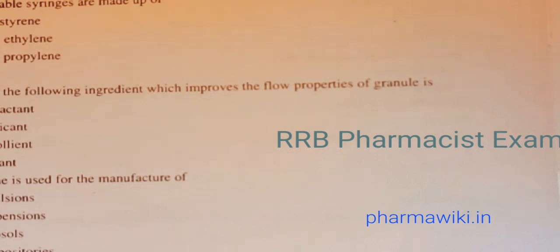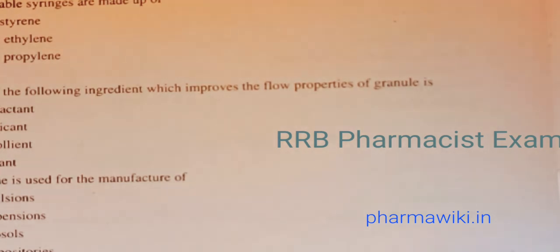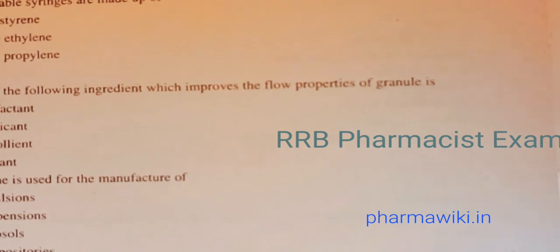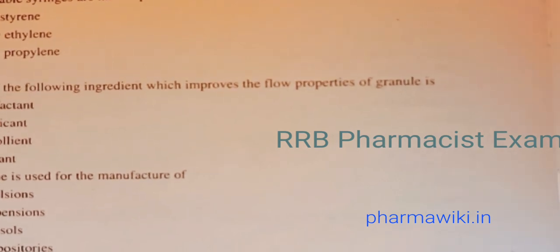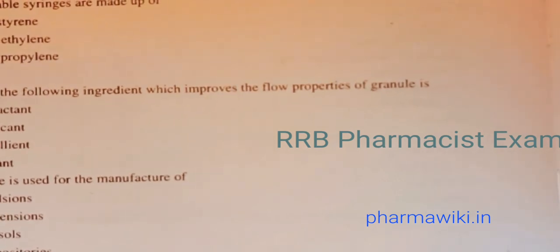Question 12: One of the following ingredients which improves the flow properties of granules is — surfactant, lubricant, emollient, or glidant. Glidant is the answer. Glidant is the ingredient which improves the flow properties of granules.